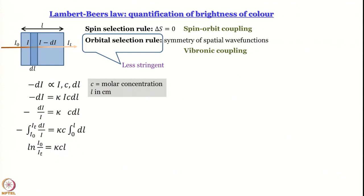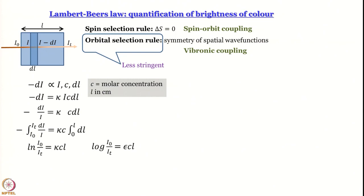Since we are more comfortable working with logarithm to base 10, it is straightforward to convert ln to log base 10 by multiplying by a constant, giving log(I₀/I_t) = εCL, where ε (epsilon) is κ multiplied by that conversion factor. All students of this course should know what that conversion factor is — please remember this value. So log(I₀/I_t) = εCL.